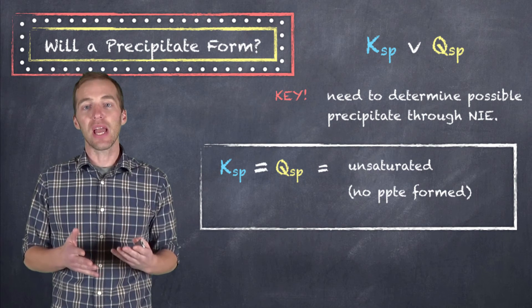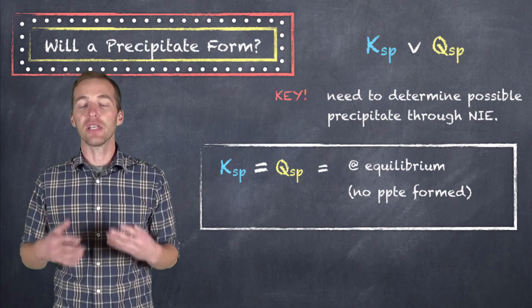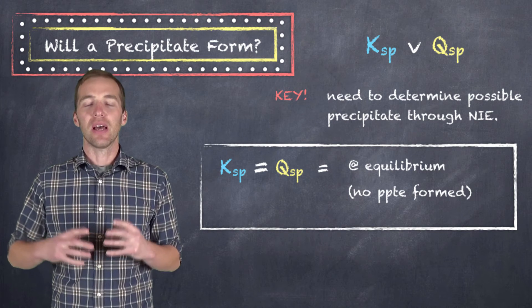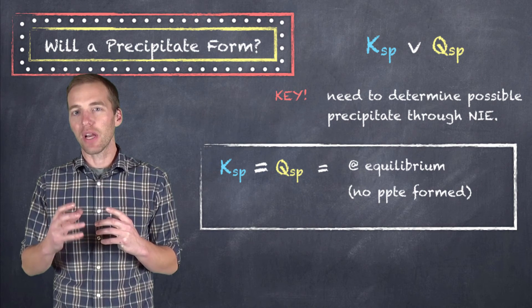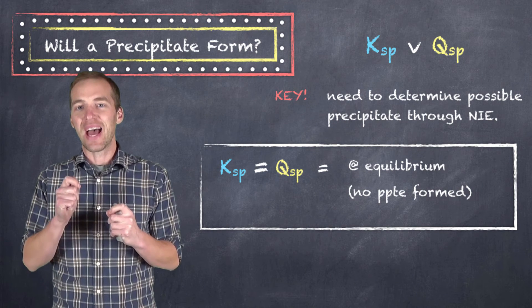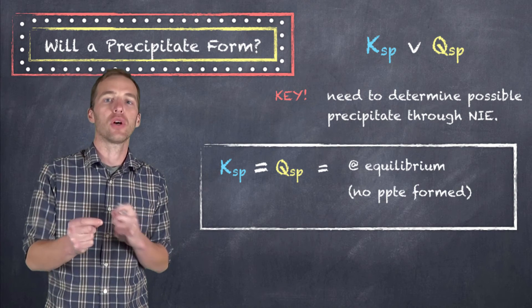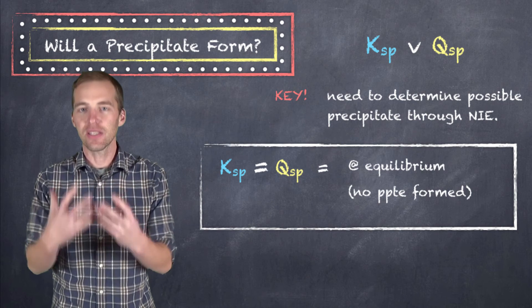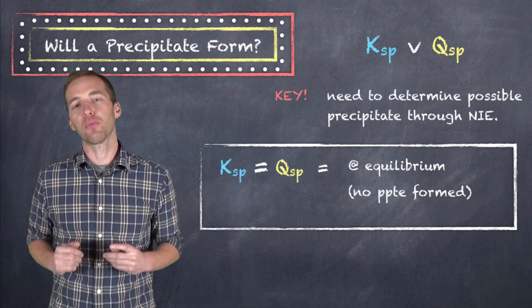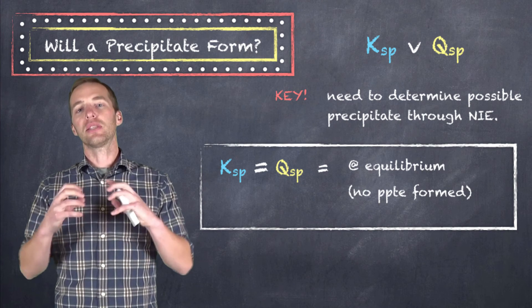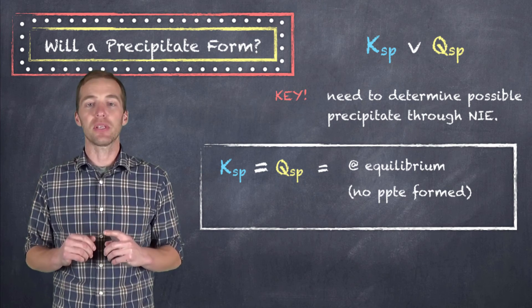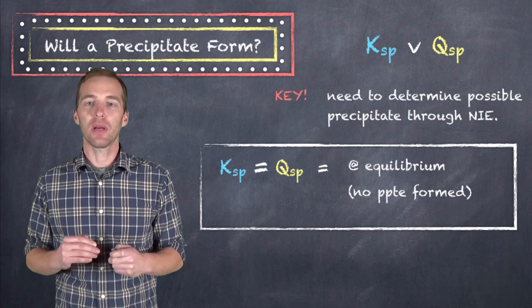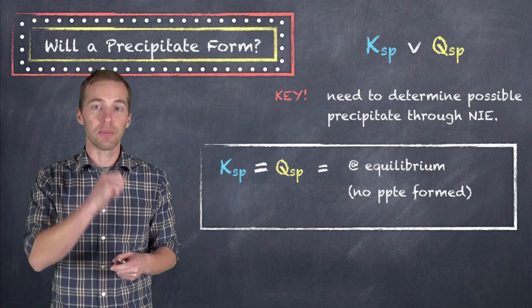At the point where the Qsp is equal to the Ksp, the concentration of the ions is such that we have reached a point of complete saturation. Now this is sort of a theoretical scenario in which we have, at the instant that the solid is being formed, it's also dissociating back into ions. So at the instant that we have this solid being formed, because we've reached this point of saturation, that solid instantly turns back into those ions. There is still no precipitate at the point of complete saturation. So when we've achieved equilibrium in terms of solubility, again, there is no precipitate.